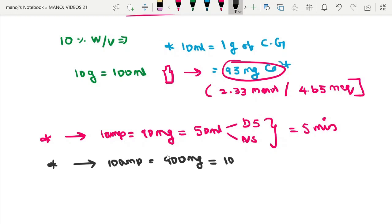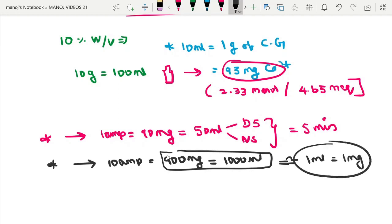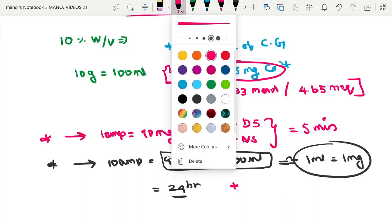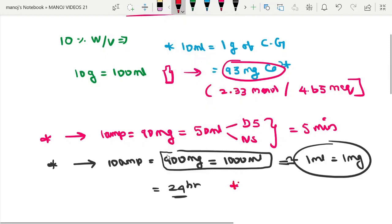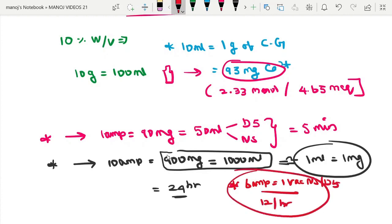This means approximately 1 ml contains 1 mg. Give over 24 hours. Alternatively, divide as 6 ampules in D5 given over 12 hours. This will be the prescription.